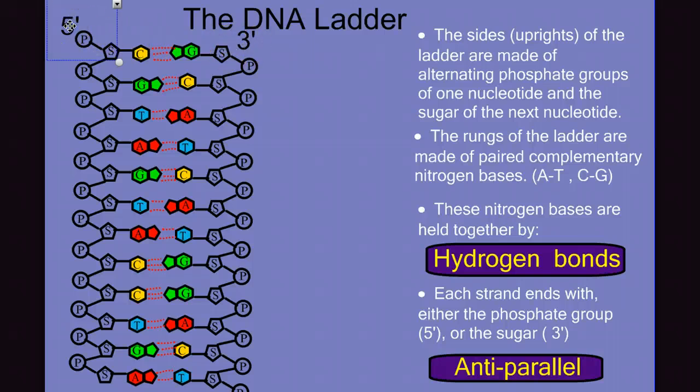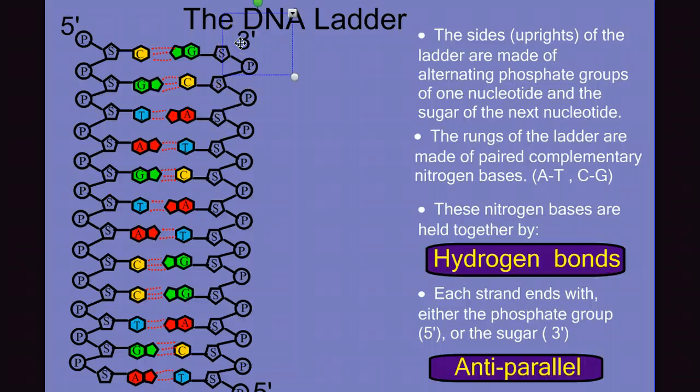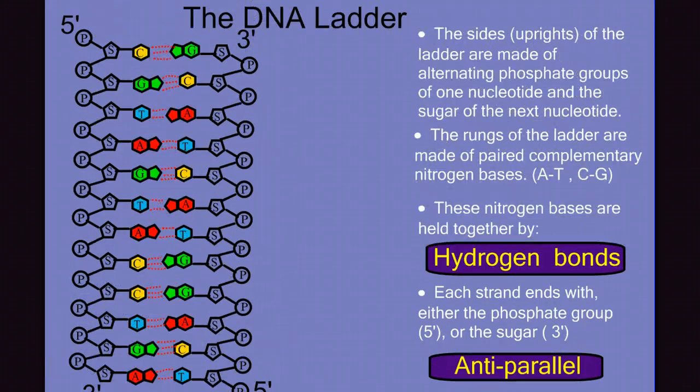But the way I remember it is phosphate and 5 both make the F sound. And we should see that it's anti-parallel so that opposite every 5' is a 3' and opposite every 3' end is a 5' end. So they've got to be opposite from each other. So there we have our DNA ladder.